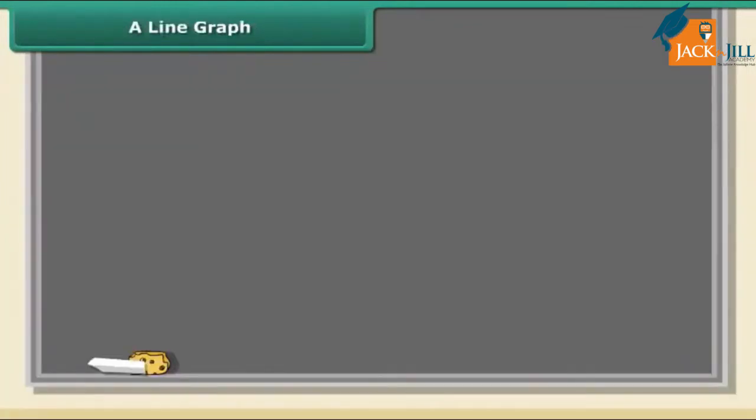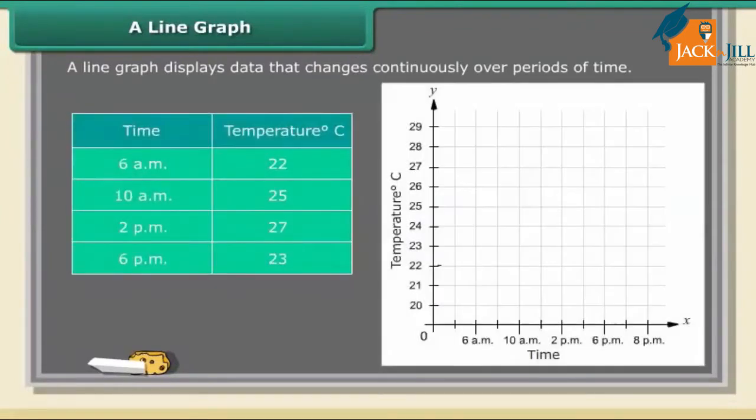A line graph: A line graph displays data that changes continuously over periods of time. The table shows the temperature of Chennai city taken every four hours for a day. We call this a time-temperature graph. The horizontal line x-axis shows the timings at which temperatures were recorded. The vertical line y-axis denotes the temperature.